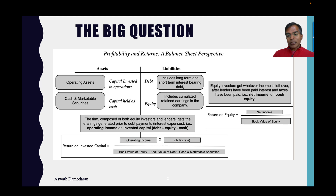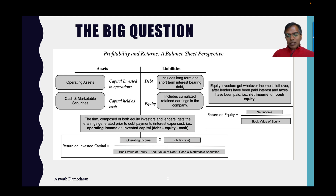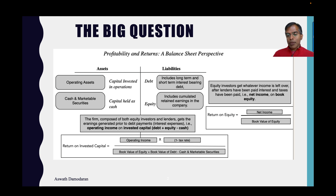What are accounting returns? There are two broad measures you might run into. There are two ways to fund a business: debt and equity. The first measure looks at what equity investors are getting out of the business — you look at net income and divide by the book value of equity. Return on equity is net income divided by book value of equity.